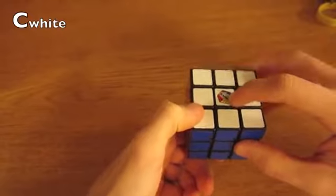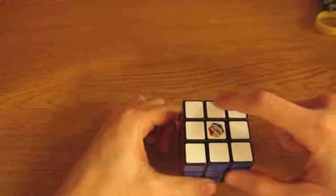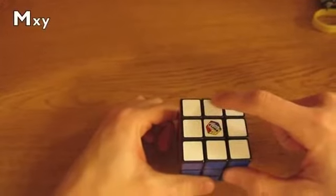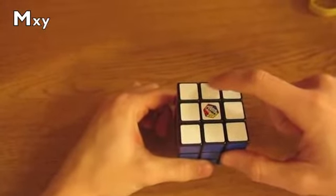We define the center as c sub x, where x is the color of that face. In this case, c sub white. We define the middle pieces as m sub xy, where x and y are the two adjacent colors. An example of this would be m sub white green.